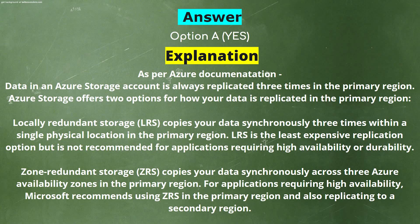LRS is the least expensive replication option but is not recommended for applications requiring high availability or durability. Zone redundant storage (ZRS) copies your data synchronously across three Azure availability zones in the primary region. For applications requiring high availability, Microsoft recommends using ZRS in the primary region and also replicating to a secondary region.